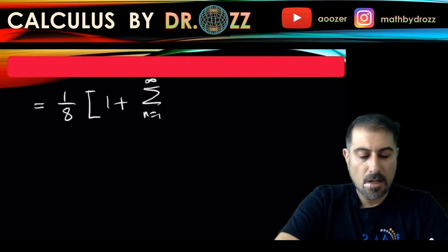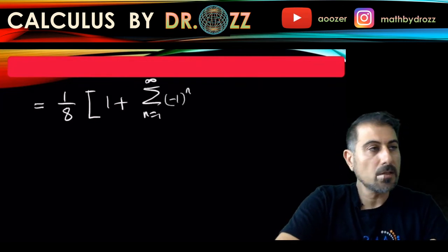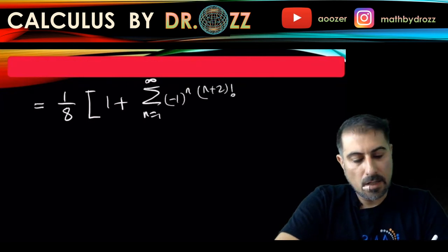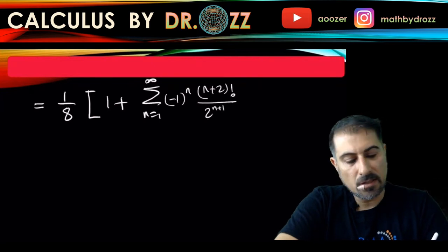And this is (n + 2) factorial, and then you have 2^(n+1), and maybe n factorial as well, times x to the power of n.